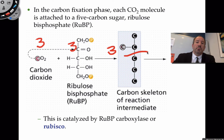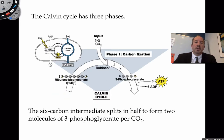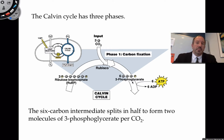When you fracture those three six-carbon intermediates, you get two three-carbon molecules each, giving a total of six three-carbon molecules. Since three CO2s came in and the cycle goes around twice, you end up with six three-carbon molecules called 3-phosphoglycerate. That completes the carbon fixation phase.